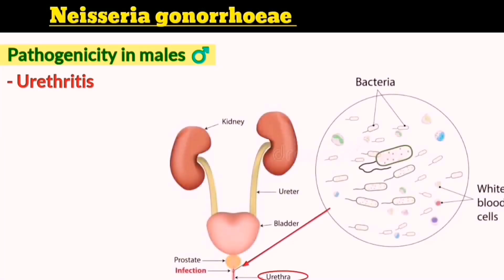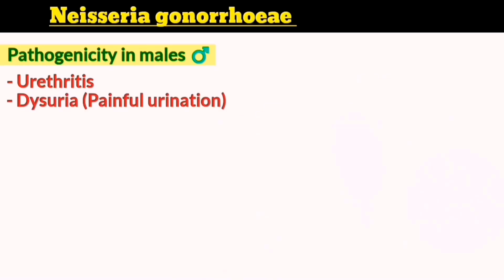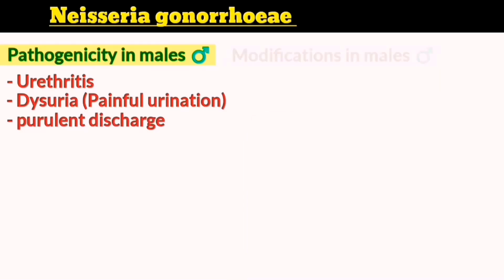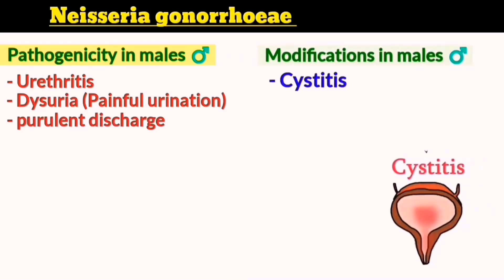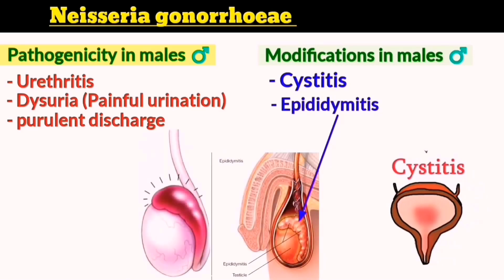It causes urethritis in men, which may result in pain during urination called dysuria, with the release of a yellowish purulent fluid. When these symptoms are noticed, the infection should be treated immediately; otherwise it can lead to chronic serious complications such as cystitis and epididymitis, which is infection of the epididymis — the tube located on top of each testicle that gathers and stores sperm.